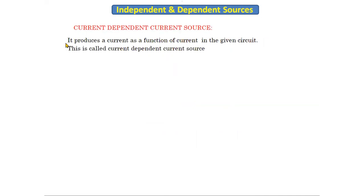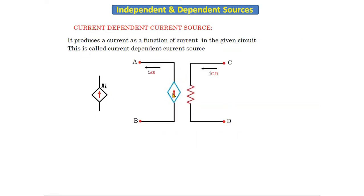The last dependent source is the current dependent current source. It produces a current as a function of current in the given circuit. First of all it is a current source, depending on current — that's why it is called a current dependent current source. In the diagram, IAB is the current passing through the source, and it depends on ICD, the branch current. IAB is directly proportional to ICD, giving IAB = A × ICD, where A is a constant. These are the four types of dependent sources.